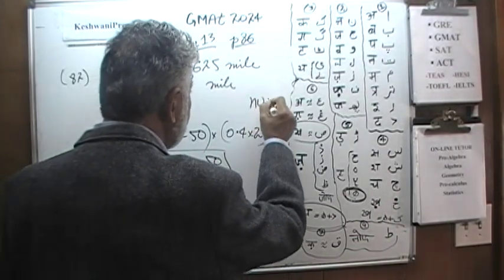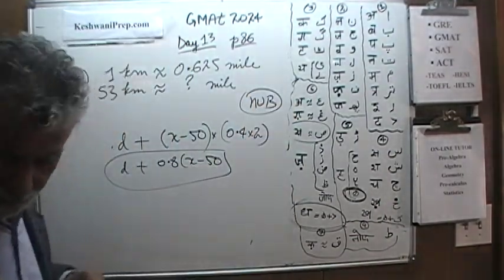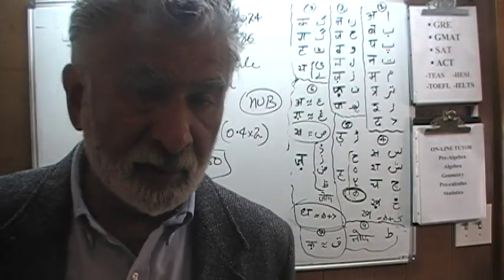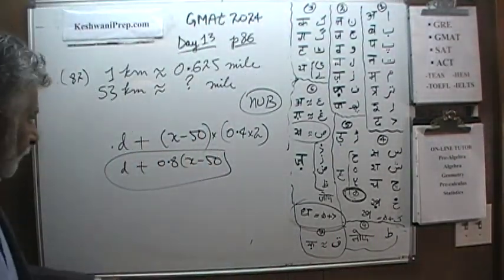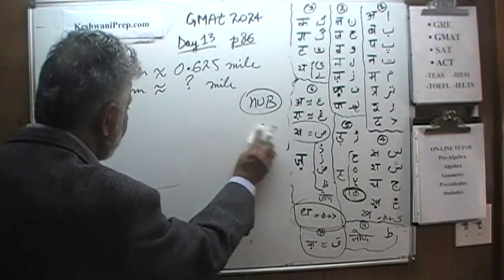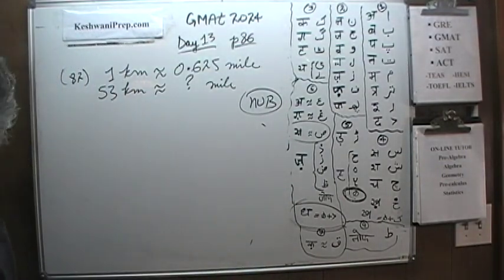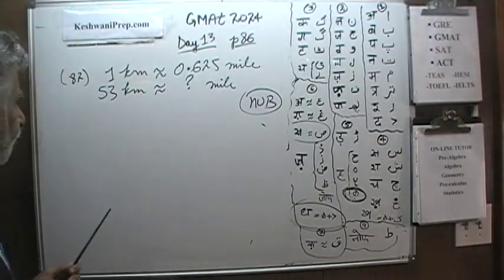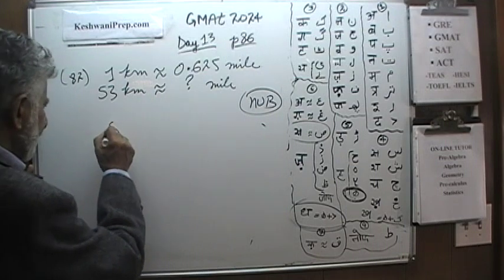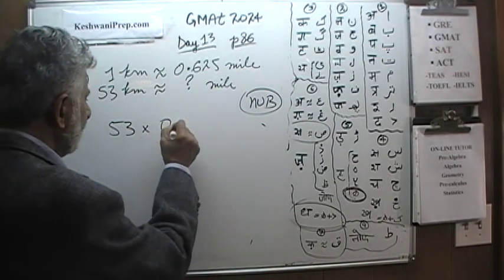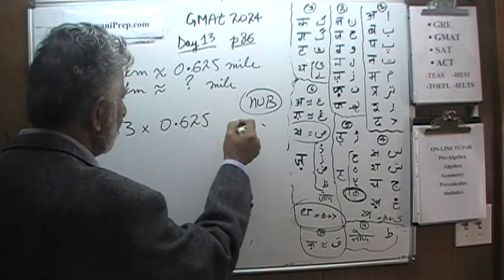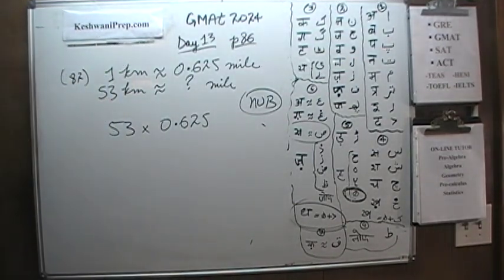If you don't know what nub means, look it up and learn it. Nub means the gist of something, the essence, the core, the main idea, the central point. The problem as stated in the book is mumbo jumbo, but that's what they're looking for. All you have to do is take 53 and multiply it by 0.625, and that will give us our answer.